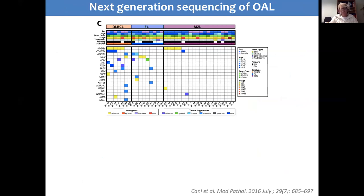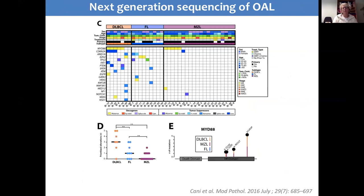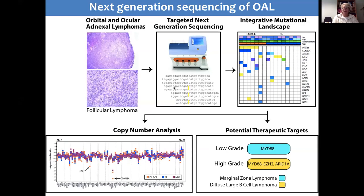There are next-generation sequencing panels which exist — more within the research area — designed for ocular adnexa lymphomas. This was work done by Canny and co-workers in the States, who designed an NGS panel with many different genes to help differentiate between MALT lymphomas, marginal B-cell lymphomas, follicular lymphomas, and diffuse large B-cell lymphomas. They use this on a regular basis. The advantage of NGS panels is that you can undertake a large number of investigations simultaneously, and using a pyrosequencer you can apply this technique on formalin-fixed paraffin-embedded samples.